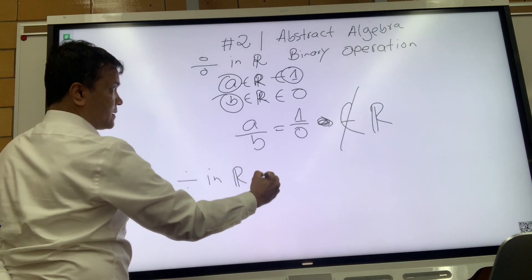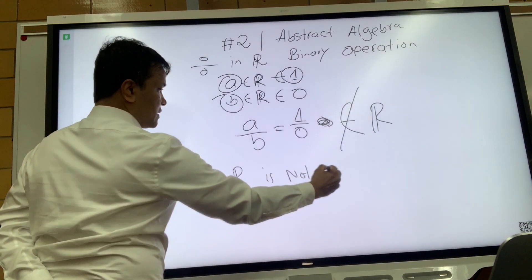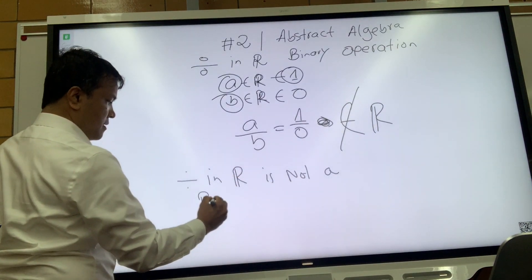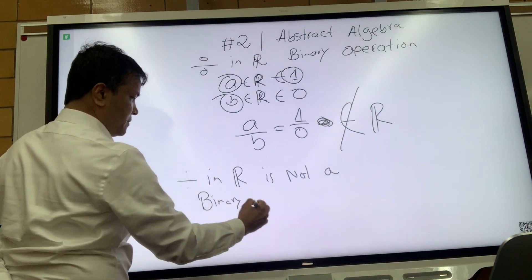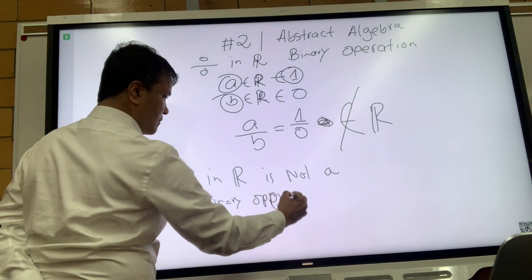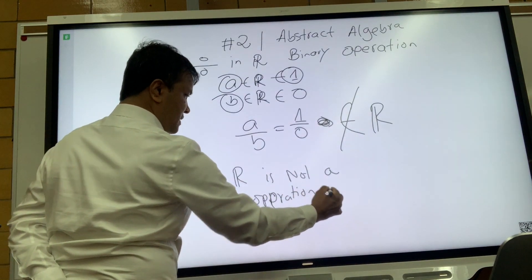We can conclude that division in R is not a binary operation, simply because it's not closed.